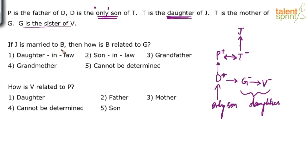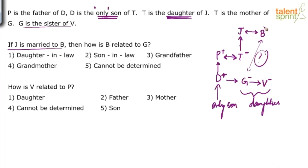Now look at the questions. If J is married to B, how is B related to G? So J is married to B — B's name was not there before. The problem is we have no clarity on J's gender. If J is male, B would be female; if J is female, B would be male. It simply says J is married to B, so it can take any gender. B will either be the grandfather or the grandmother of G — because G's parents' parent is your grandparent. But what exactly is not known because B's gender is not given. Hence the answer would be option 5: cannot be determined.